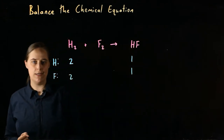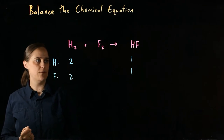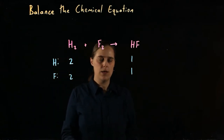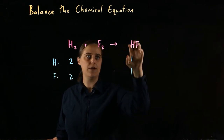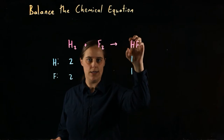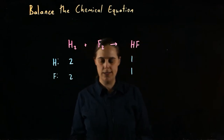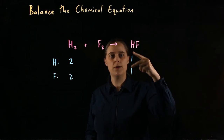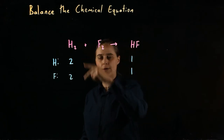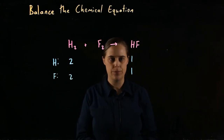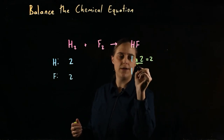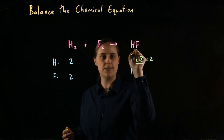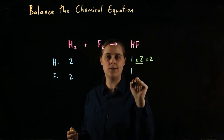Our goal in balancing a chemical equation is to have the same number of atoms before and after the reaction — we are only rearranging atoms, not creating or destroying them. So I'm going to need some small whole number in front of this HF. I need to make more than one HF molecule as a product. I need to figure out what number to multiply one by in order for it to equal two — that's going to be two.